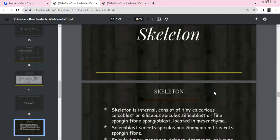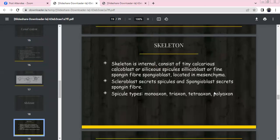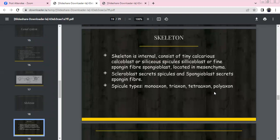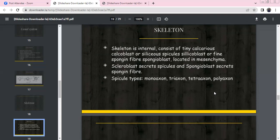The skeletal system is internal. There are calcareous spicules secreted by calcoblasts, siliceous spicules secreted by silicoblasts, and spongin fibers secreted by spongioblasts from mesenchyme. Main spicule types are monoaxone, triaxone, tetraaxone, and polyaxone.